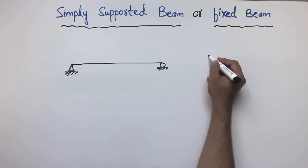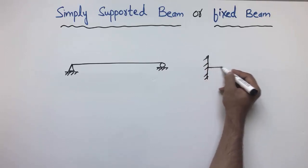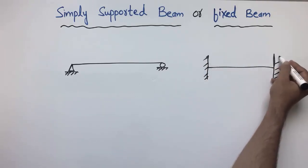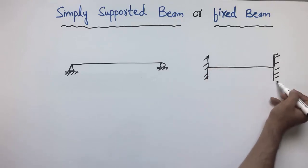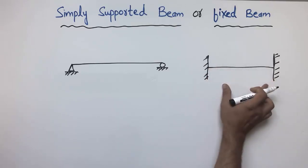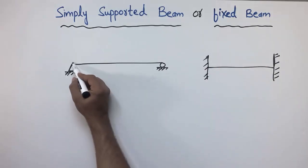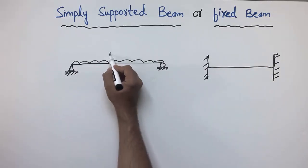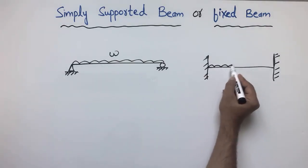The fixed beam is supported by two fixed supports, one at each end. Here also there is a fixed support, so this type of beam is known as the fixed beam. Let's suppose there is a uniformly distributed load acting on this beam, represented by wo.